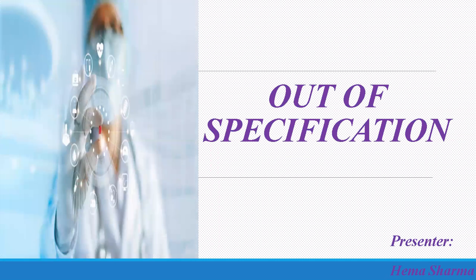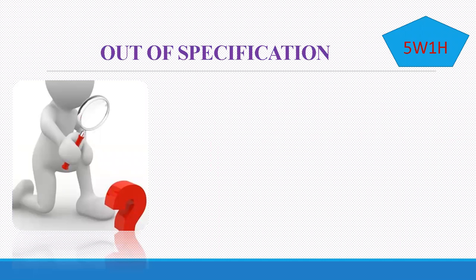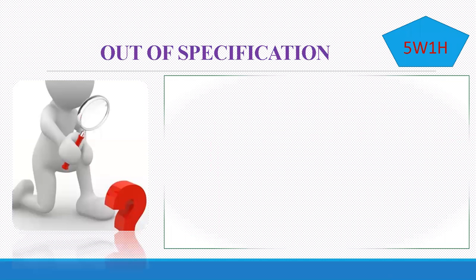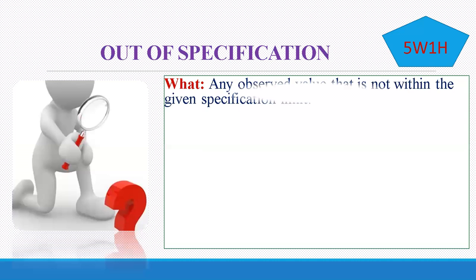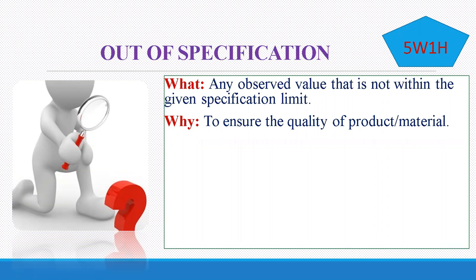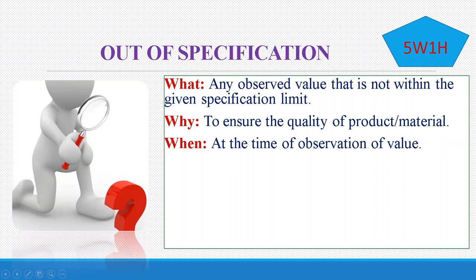Out of specification. What is out of specification? It can be understood as any observed value that is not within the given specification limit. Why? To ensure the quality of the product or material. When? At the time of observation of the value.